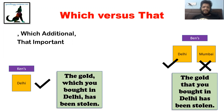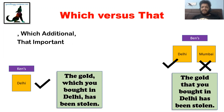Suppose you have two friends, Ken and Ben, and both have gold in their houses. Ken has only one type of gold — from Delhi. Ben has two types — Delhi and Mumbai gold. Now suppose both had thefts in their houses. From Ken's house, of course, there was only one kind of gold, so that was stolen. In Ben's house there were two types of gold, and the Delhi gold was stolen but the Mumbai gold was safe.